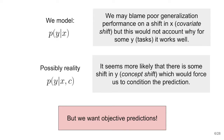We typically model P(Y|X) and may blame poor generalization performance on a shift in X, aka covariate shift, but this would not account for why some Y's generalize well. A possible reality is that there is some shift in Y, aka concept shift, which would force us to condition the prediction on the dataset. This is not desirable because we want objective predictions based on evidence in the data.